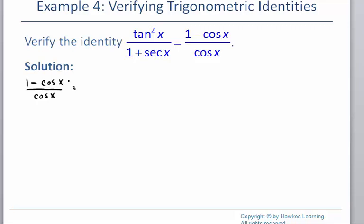I'm looking for anything algebraically that I can do to simplify this expression. One thing that comes to mind is that I can break this up into two separate fractions — it's like we combined fractions and now I want to undo that. So I'm going to write 1 over cosine x, and then cosine x over cosine x.